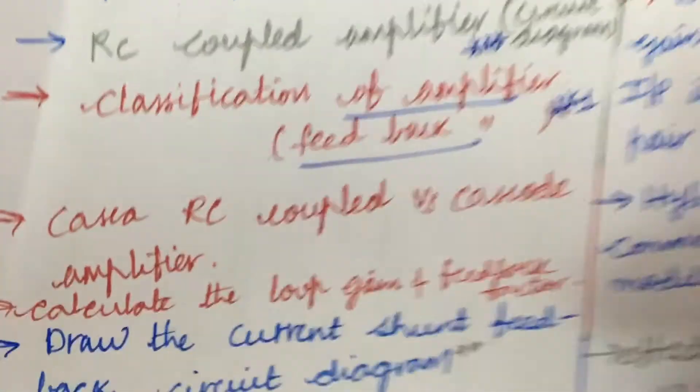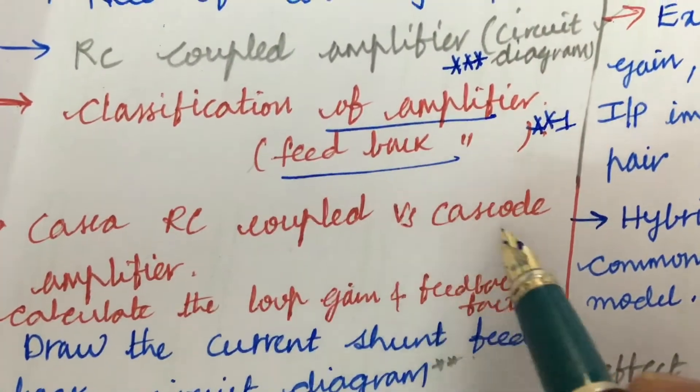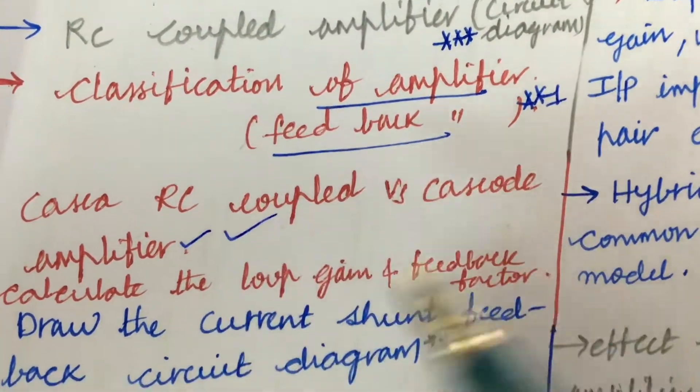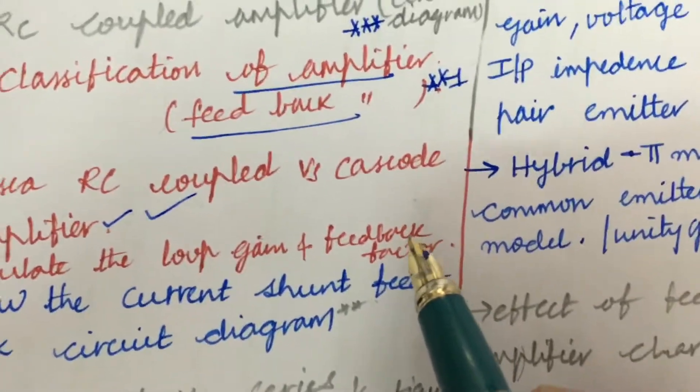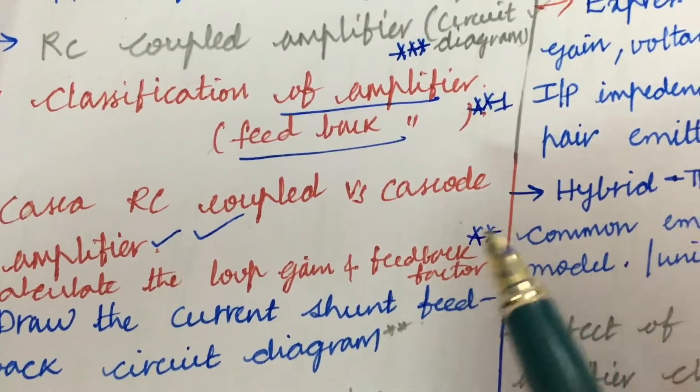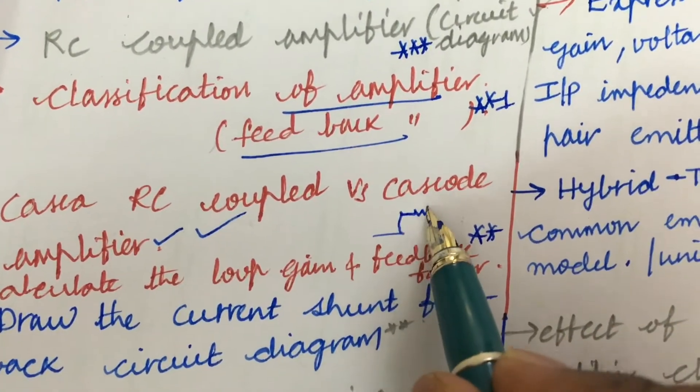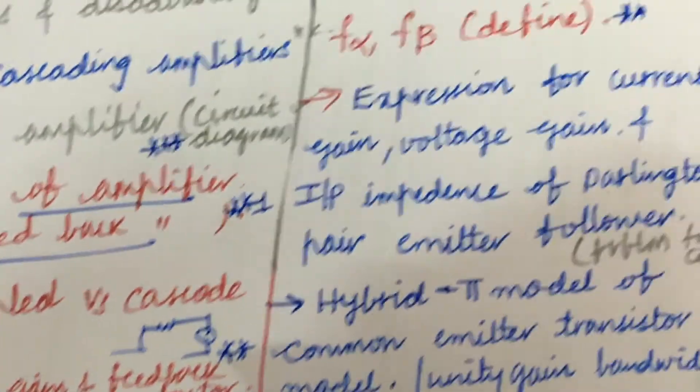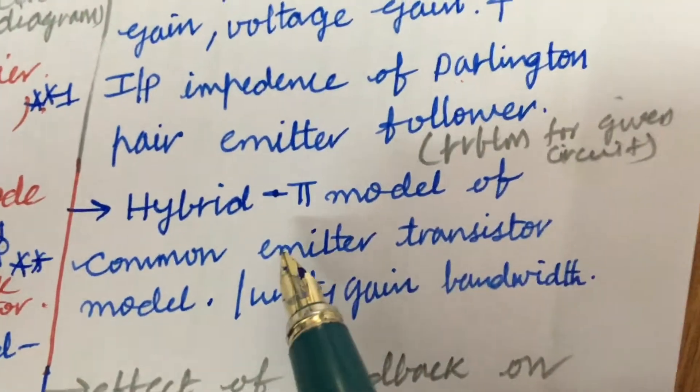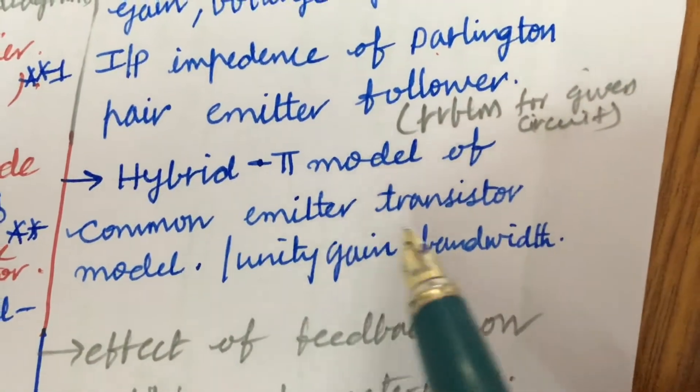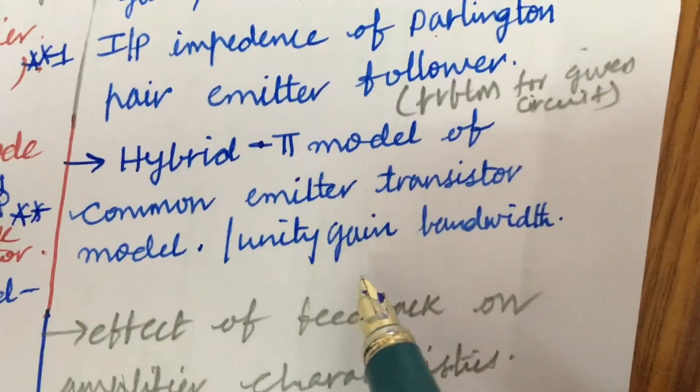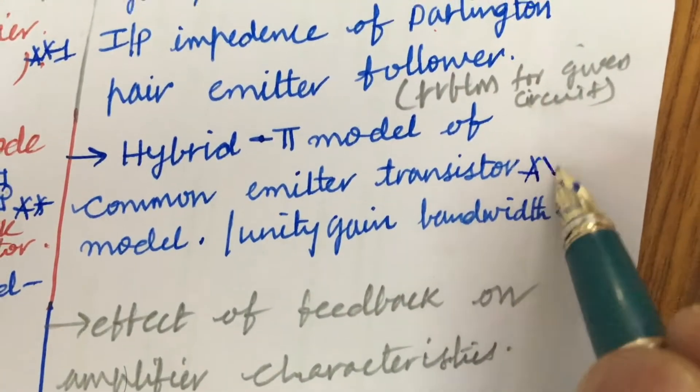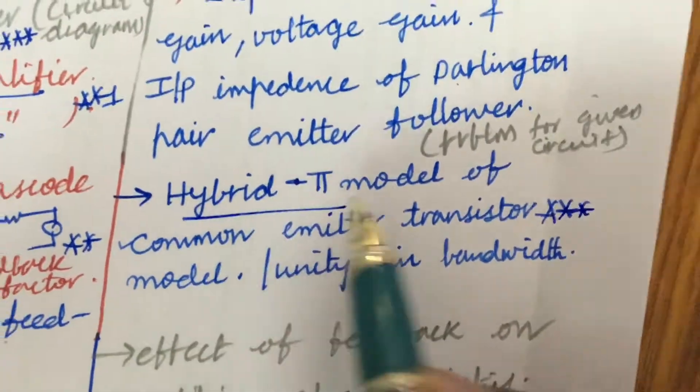Cascade RC coupled versus cascode amplifier - the differences. Calculate the loop gain and feedback factor of a given circuit. Certain circuit will be given of which you are supposed to work out the cascade as well. Later, hybrid pi model of common emitter transistor model, unit gain bandwidth - related to the hybrid pi gain we can expect one question from this part. You can expect two questions for sure.